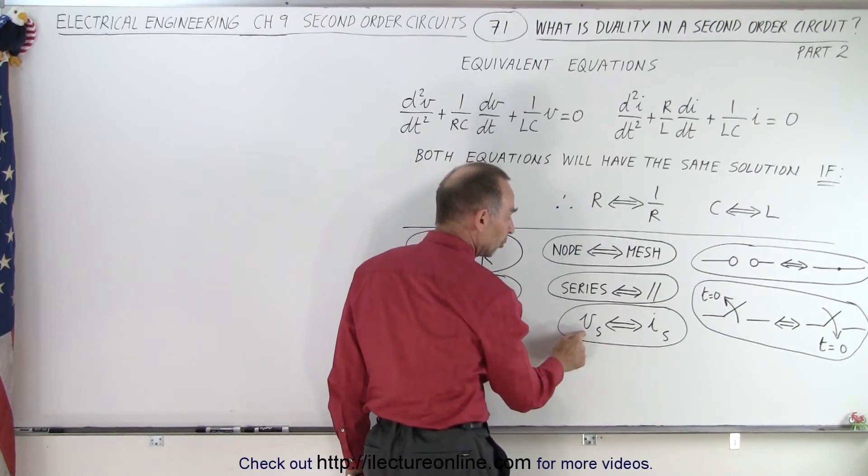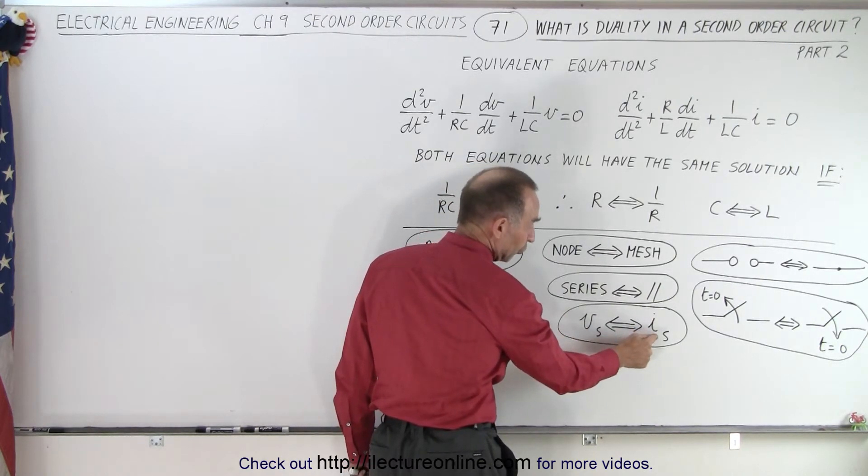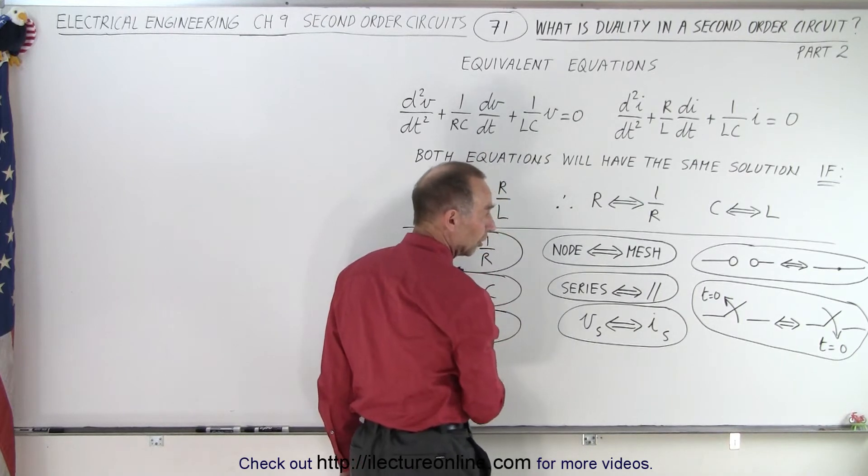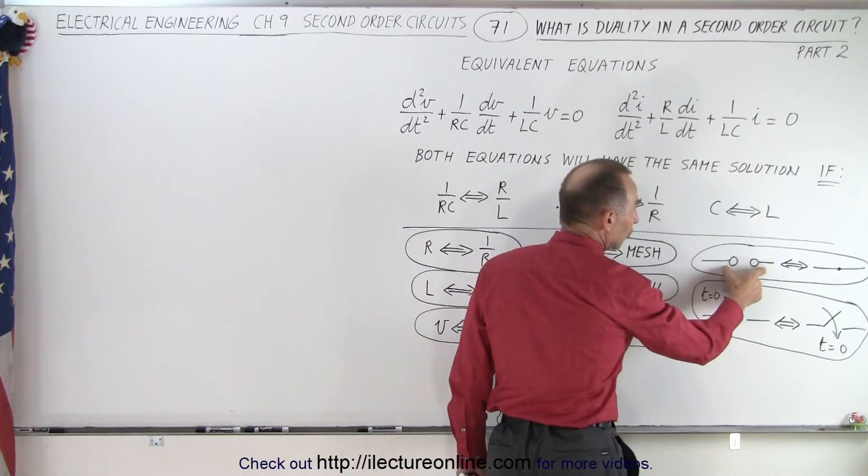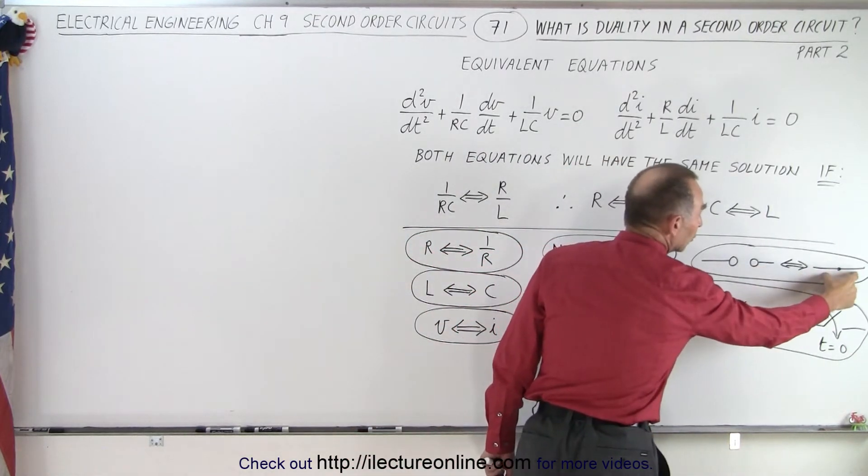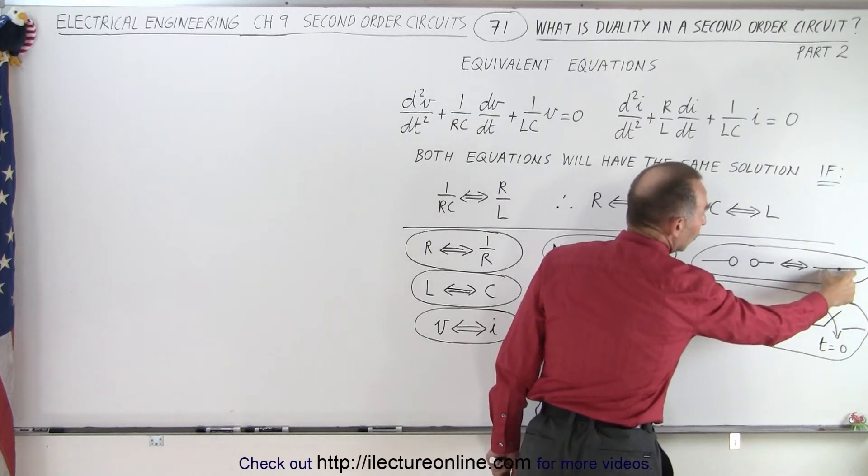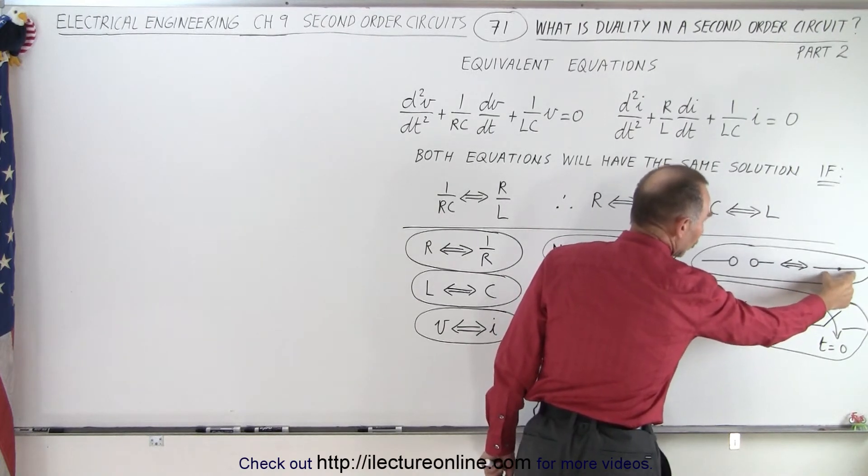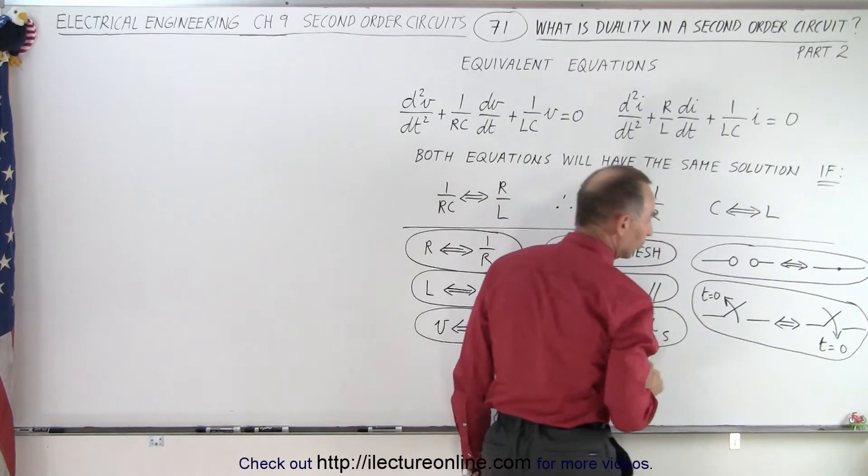The voltage source will become the current source, or the current source will become the voltage source. An open in the circuit will become what we call a closed or short circuit, and a short circuit in the circuit will become an open circuit.